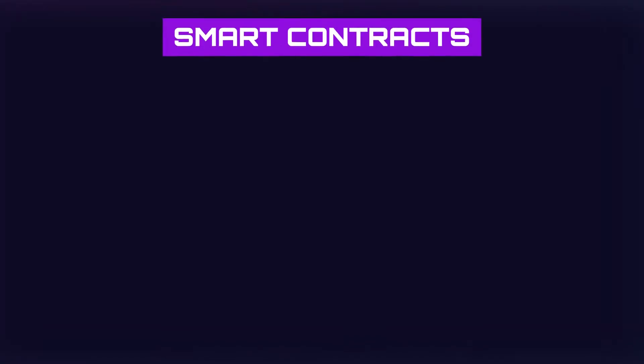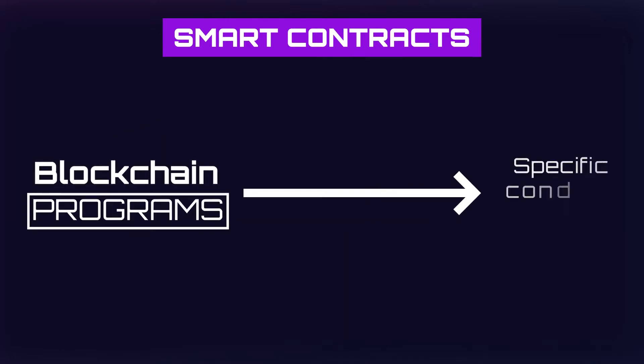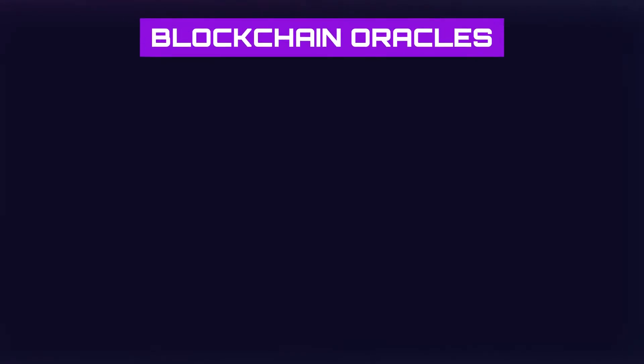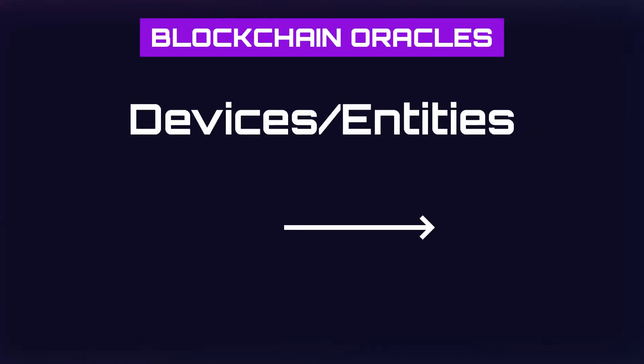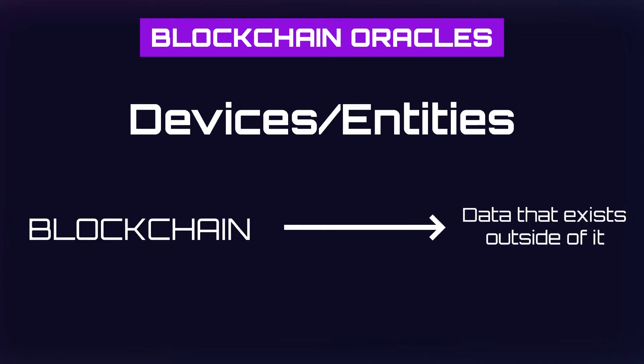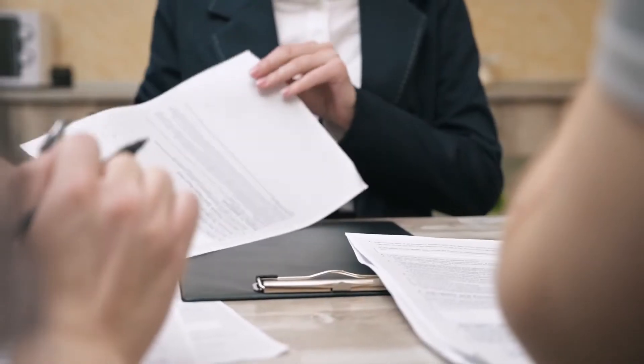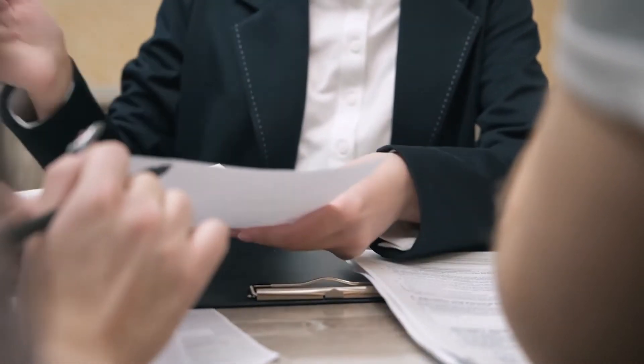There are a few things you need to know to fully understand Chainlink's functionality. The first is smart contracts — programs stored on the blockchain that run when specific conditions are met. They automate the execution of agreements so all participants can be certain of the outcome without the involvement of an intermediary. The second is blockchain oracles — devices or entities that connect a blockchain network to data that exists outside of it, also dubbed blockchain middleware and the bridge between the two worlds.